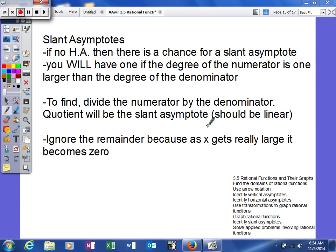We're going to look at slant asymptotes. The slant asymptote has a possibility of happening if you have no horizontal asymptote, then there's a chance for a slant asymptote.